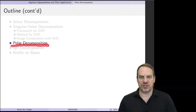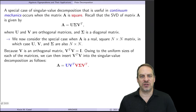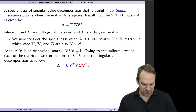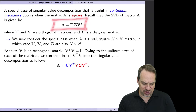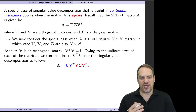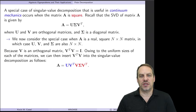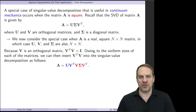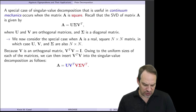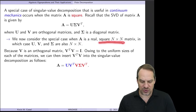In this video, we're going to discuss polar decomposition, which is a special case of the singular value decomposition that we've been discussing in the last several videos, but applied to square matrices. Here is the SVD of a matrix A: it's U sigma V transpose, where in this case we're only assuming that A is real. The U and V matrices are orthogonal, and sigma is a diagonal matrix with the singular values on the diagonal. Now let's take a look at the case when A is real but also square, so it's N by N.